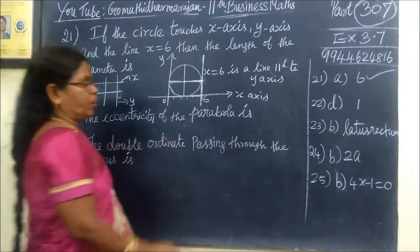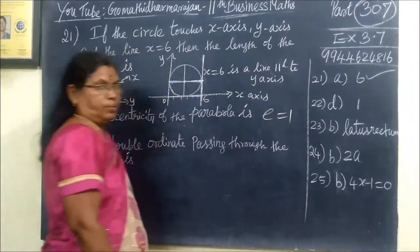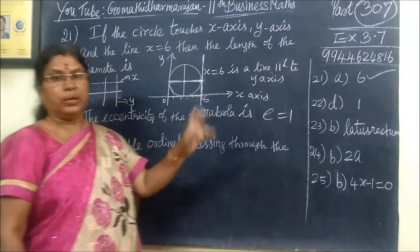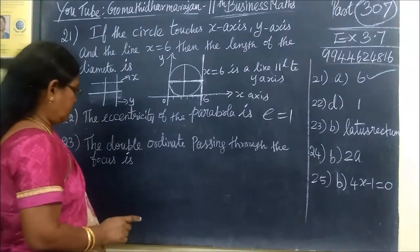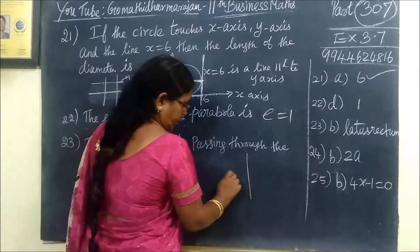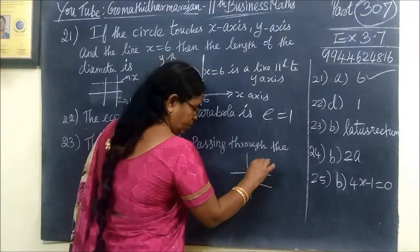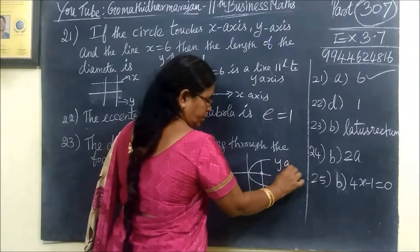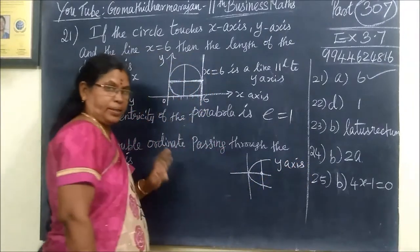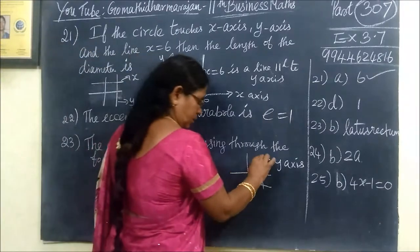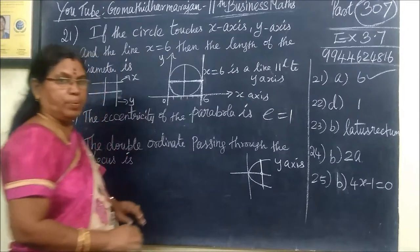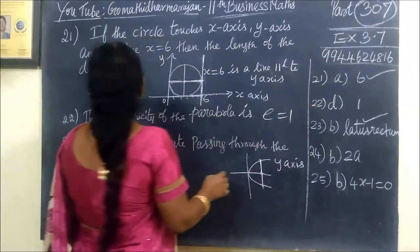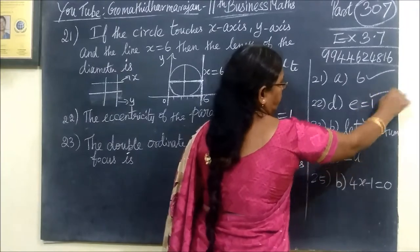And the eccentricity of the parabola: E equals 1. For a parabola, if E equals 1 it is a parabola, E greater than 1 is hyperbola, E less than 1 is ellipse. E equal to 1 refers to a parabola. The double ordinate passing through the focus — the focus, the double ordinate — is nothing but the latus rectum. An ordinate refers to the y-axis coordinate. So the answer is E equal to 1.